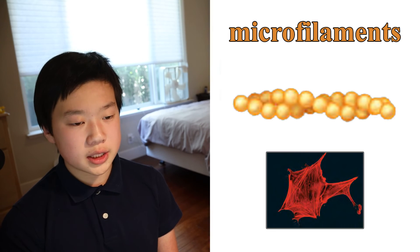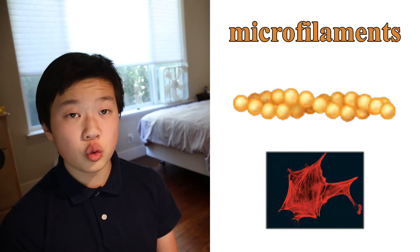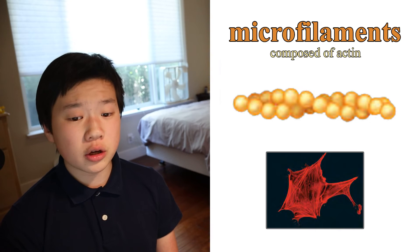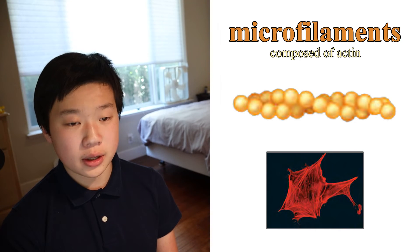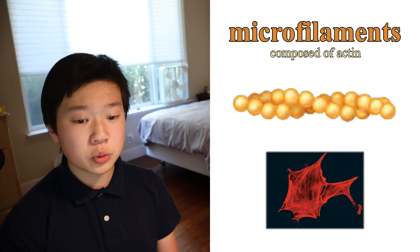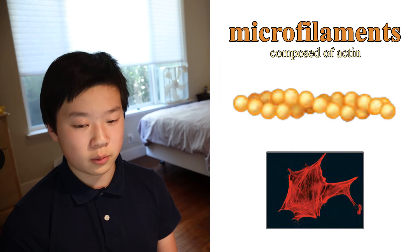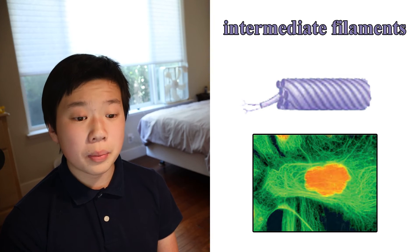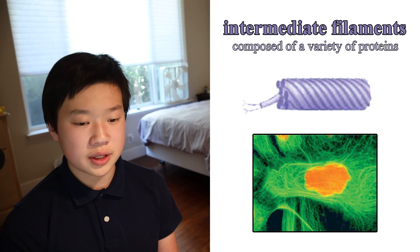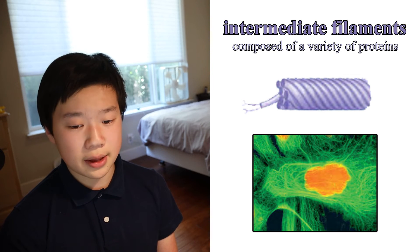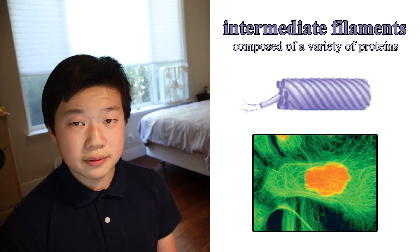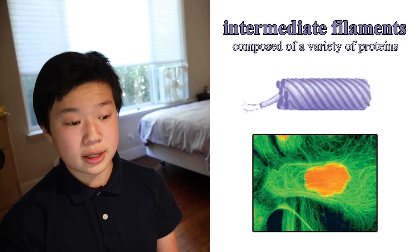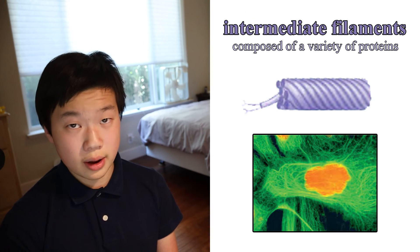Microfilaments are solid rods built from two intertwining strands of actin. A network of microfilaments within the plasma membrane supports its shape and helps to resist pulling forces on the cell. Finally, intermediate filaments are more permanent fixers of the cell. Even after cell death, intermediate filament networks persist. They also make up the nuclear lamina that supports the nuclear envelope.